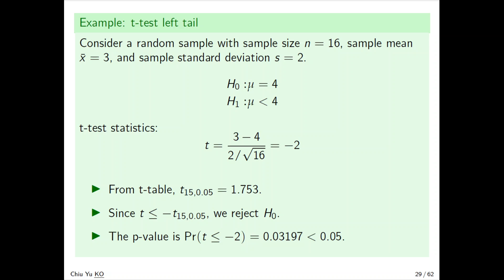Look at the example: sample mean is 3, size 16, standard deviation is 2. Again do the same calculation: (3-4)/(2/√16) = -2. Look at the t-value - because we have sample size 16, we look at 15 degrees of freedom, which is 1.7353. The test statistic is less than the negative critical value, so we reject.